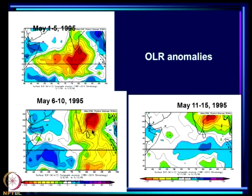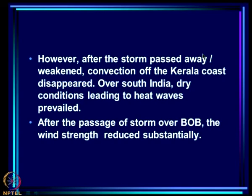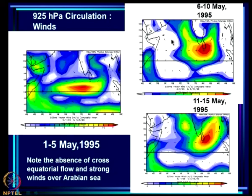The northern system intensified into a depression, which strengthened further by May 11–15. The 925 hPa circulation from NCEP reanalysis shows strong winds from May 1–5; from May 6–10 the strong winds moved northward, and by May 11–15 they spread further over the Bay of Bengal.